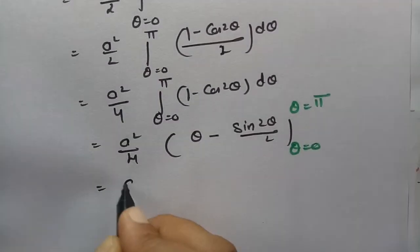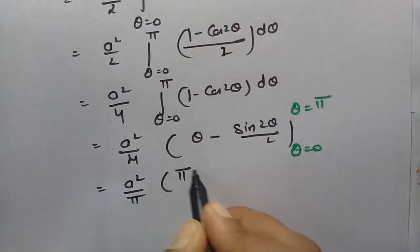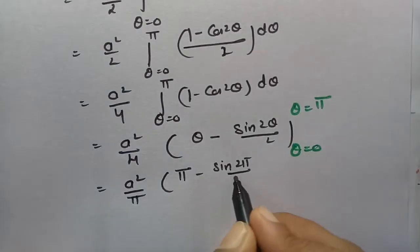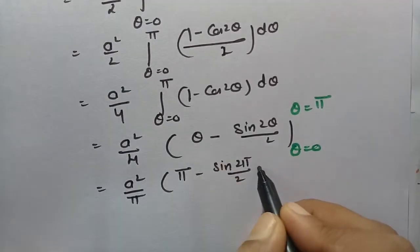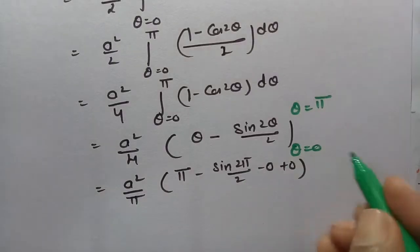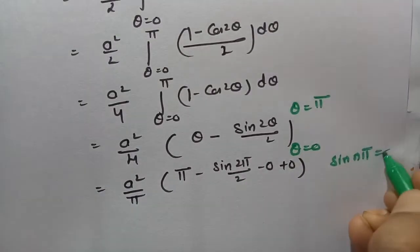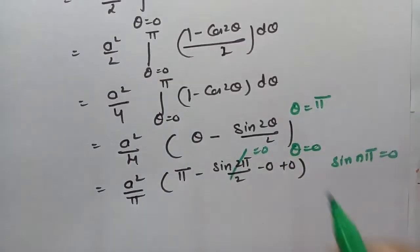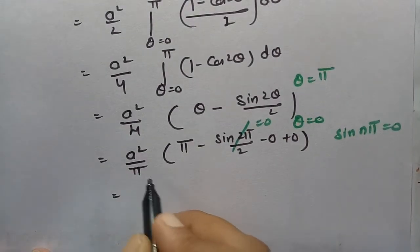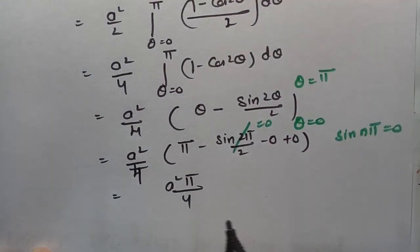So this will be a squared by 4. If I substitute the upper limit this will be pi minus sin 2 pi by 2, and if I substitute 0 this is 0 and this one is 0. As you know that sin n pi value is 0 — that is sin pi, sin 2 pi, sin 3 pi, any multiple of pi this value is 0. So what remains here? This value gives a squared pi by 4.